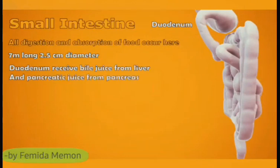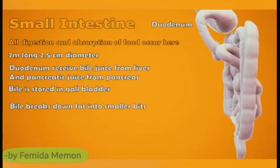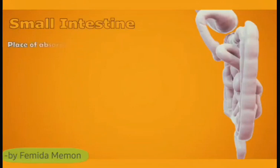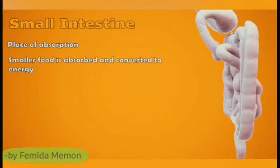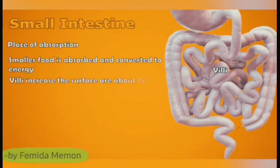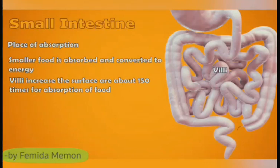The duodenum receives bile juice produced by the liver and pancreatic juice from the pancreas. Bile juice is stored in the gallbladder. Bile helps in breaking fats into smaller bits — this process is called emulsification of fat. Bile also neutralizes the stomach acid and makes the medium alkaline. The smaller food molecules are absorbed and finally converted into energy. The absorption capacity of the small intestine is increased by millions of finger-like projections called villi, which increase the surface area by about 150 times. Digestion of all three food components is completed in the small intestine.